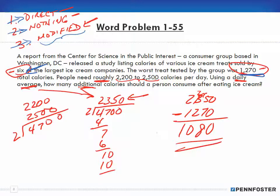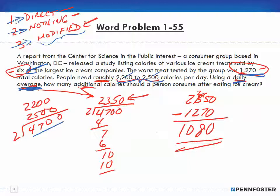People need roughly 2,200 to 2,500 calories. This is modified information — if you use either 2,200 or 2,500 directly, you'll get the wrong answer, and if you say it has nothing to do with the problem, you'll also be wrong. The problem says 'use a daily average,' so I had to take an average between the two: add them to get 4,700, divide by 2, which gave me 2,350 as my daily average.